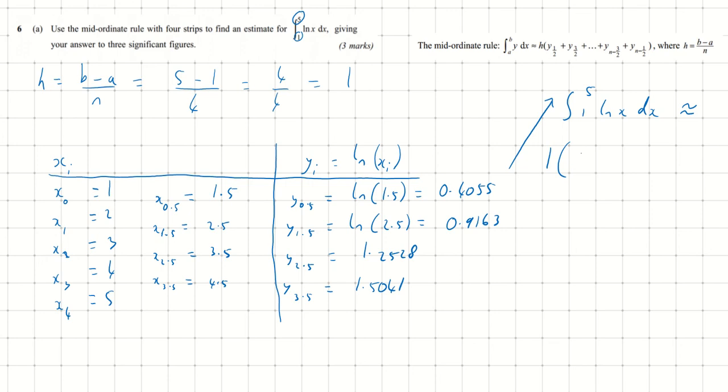That's 0.4055 + 0.9163 + 1.2528 + 1.5041. Add all those together and multiply by h, which is 1 in this case. We get 4.0787, which is 4.08 to three significant figures. That's our final answer.